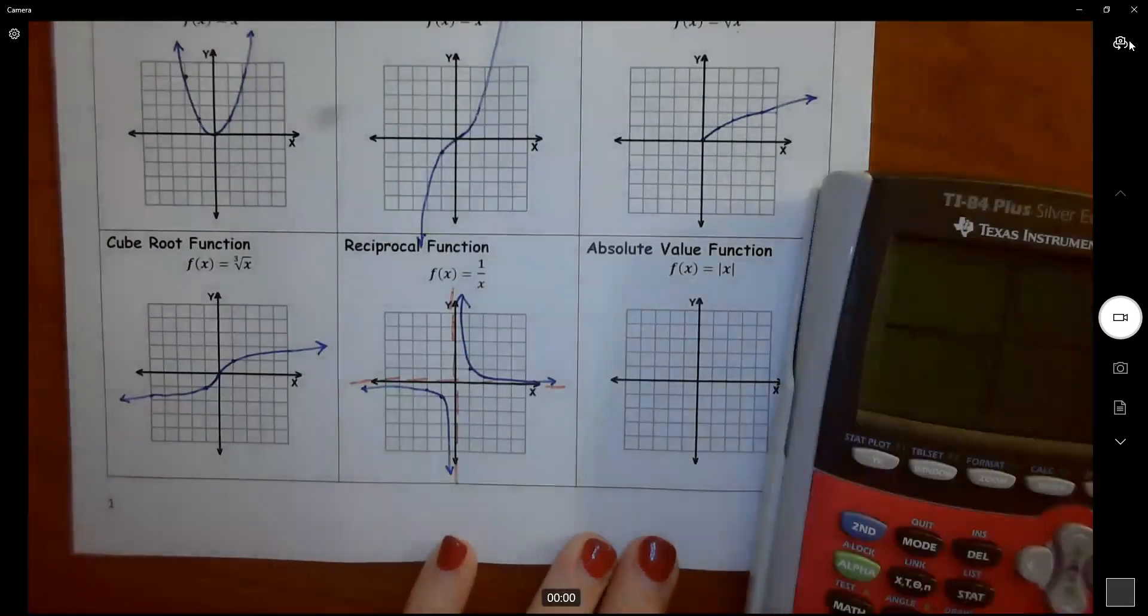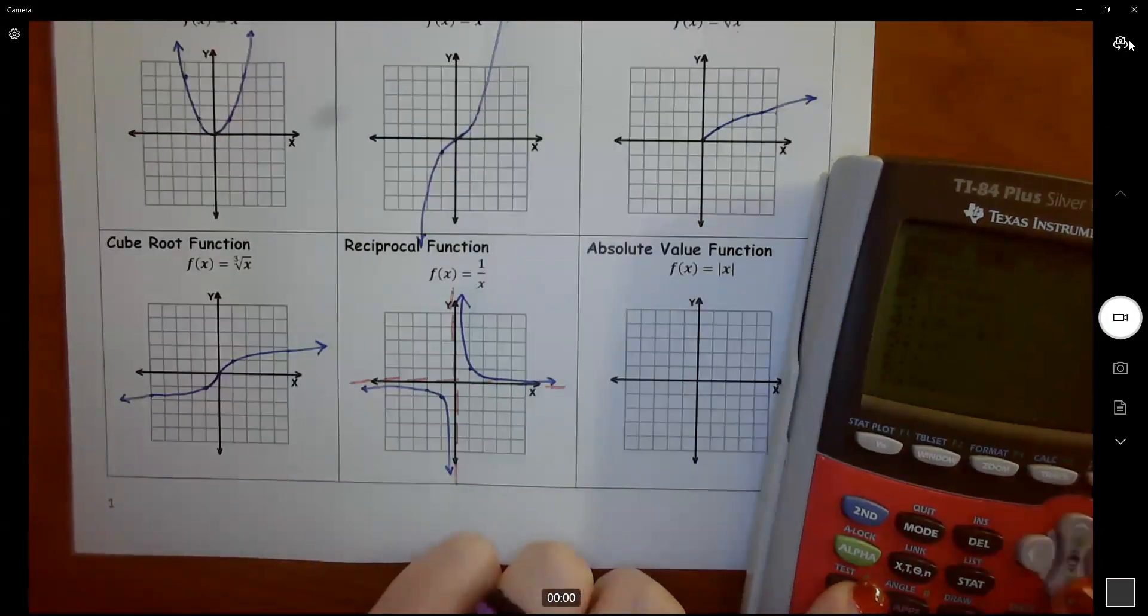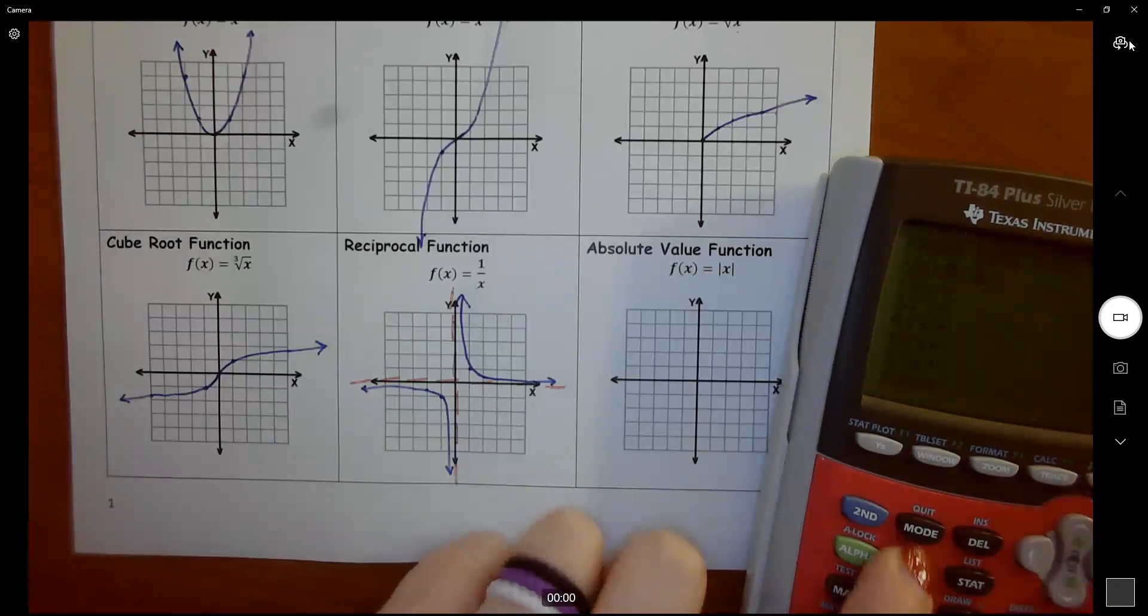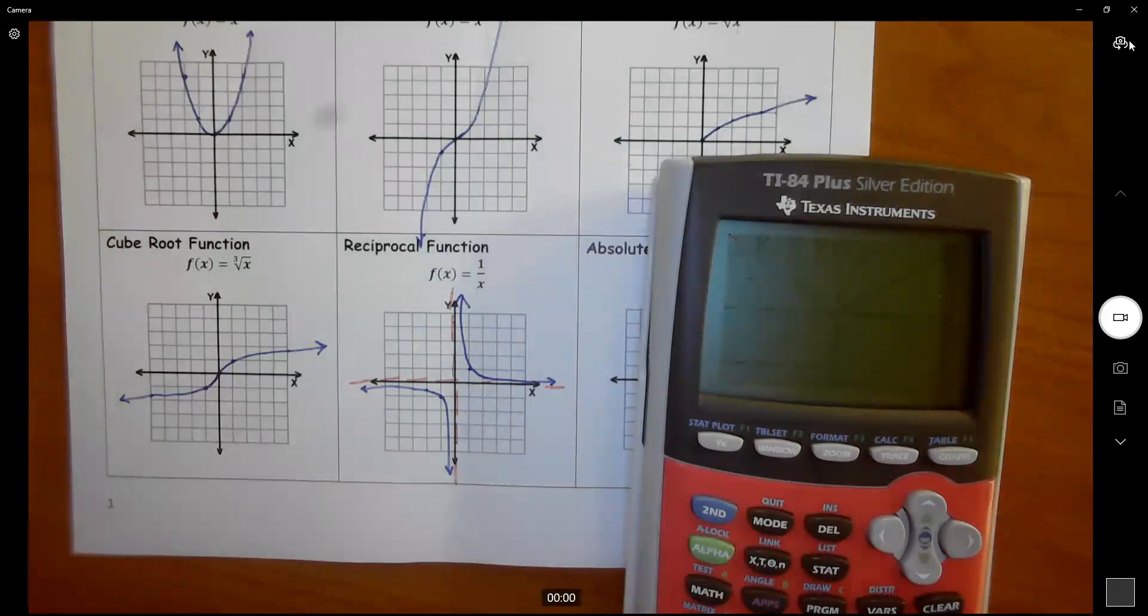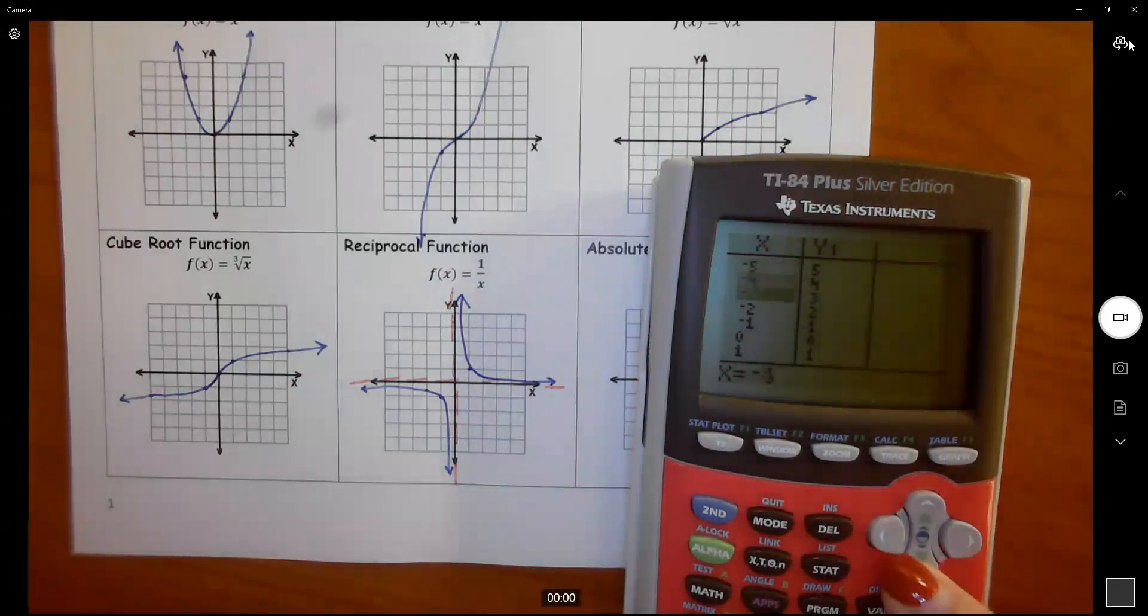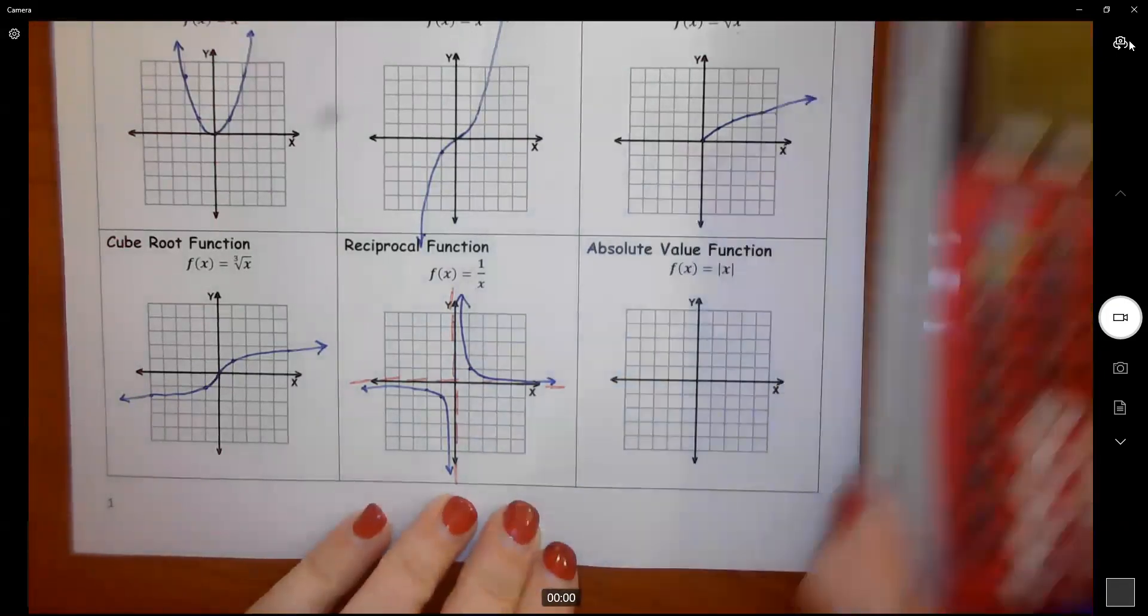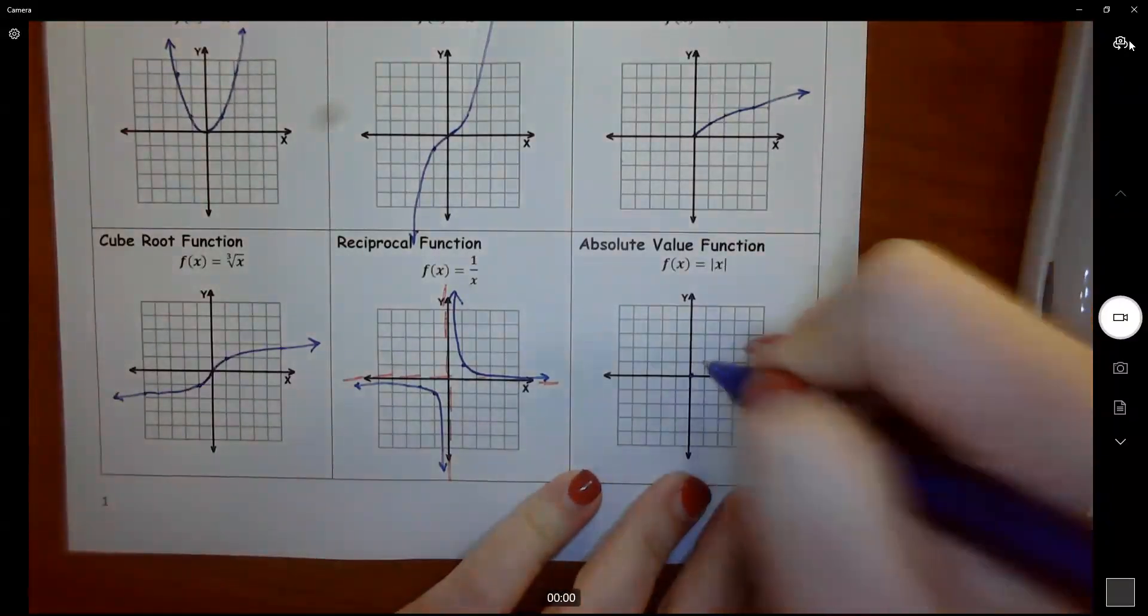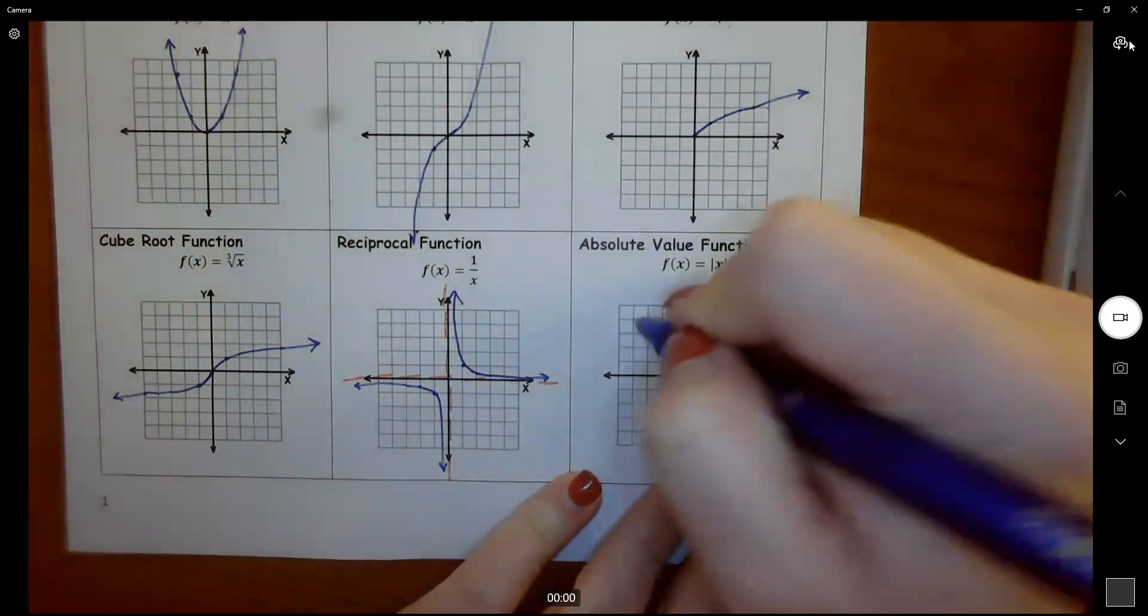And then lastly, we have the absolute value of x. It's just going to look like a V. When I go to negative 5, I got 5, negative 4, 4, negative 3, 3. That always comes out positive. And even when you put in 1, 2, 3, or 4, it's still going to come out positive. So this is going to go to the origin. And it's going to go along those diagonals. And then go along these diagonals coming up this way as well.